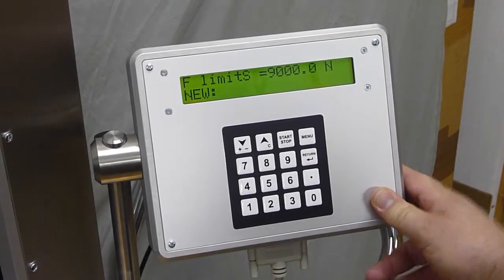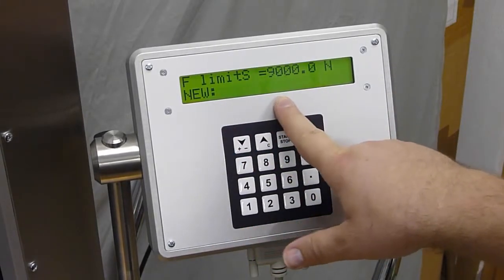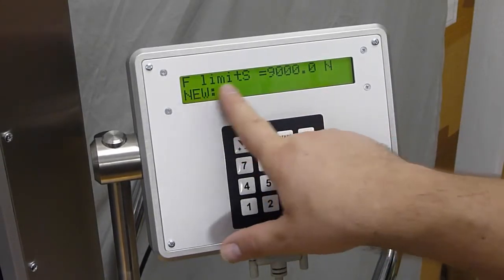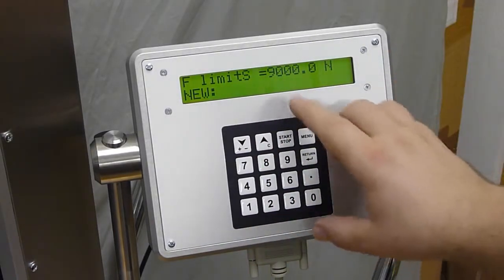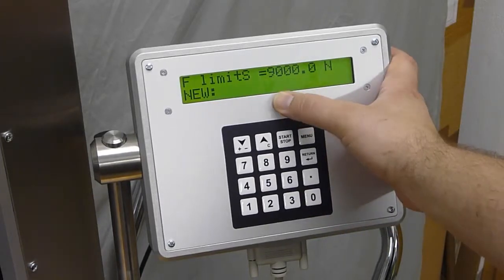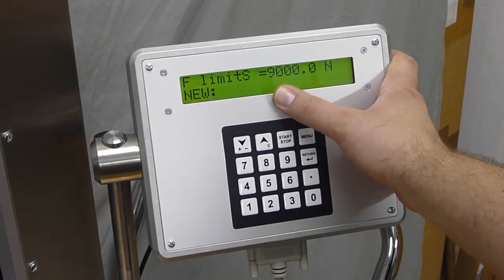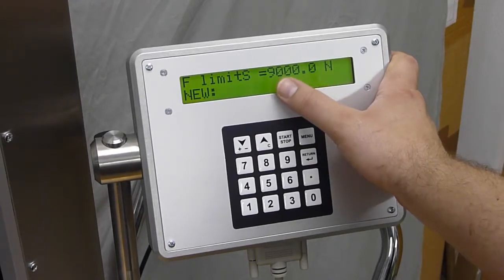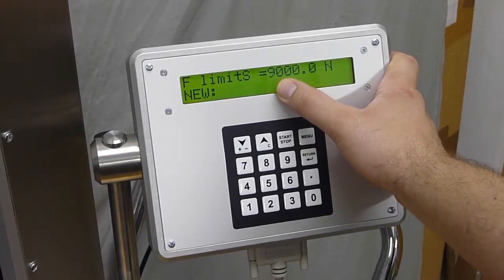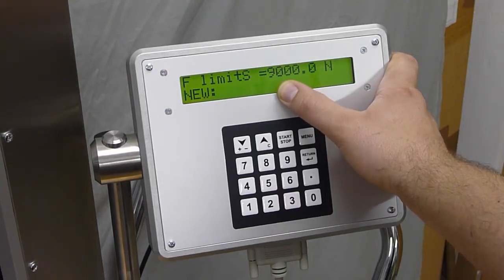F limit S. This is protection for sample, software protection. This means when during test the machine reaches 9000N it will break the test. The test will be stopped and the sample will be protected.